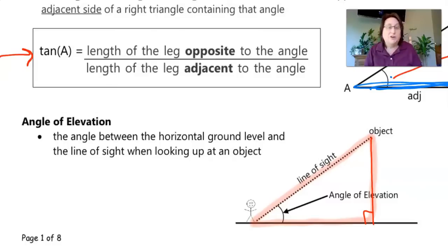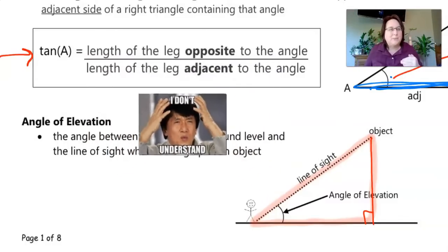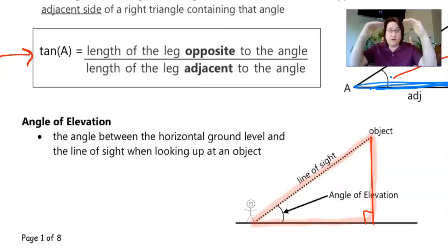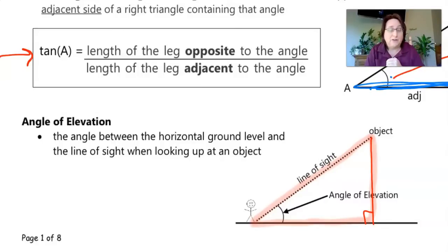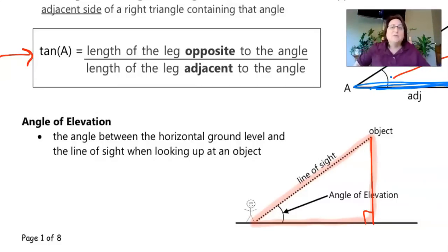The angle of elevation is created by the horizontal line of sight and the angle created when you look up. If I draw a vertical line from the object and make it perpendicular to the ground, I've just created a right triangle. And if I have a right triangle, I can use trigonometric ratios to help me solve for angle measurements and side lengths. Let's go through some examples together so I can show you how we figure out when to use which ratio and how to plug it into our calculators.